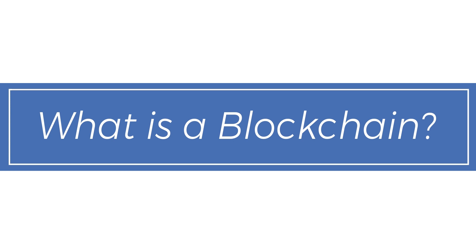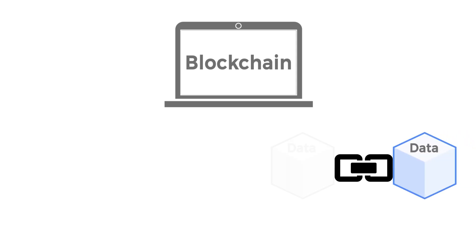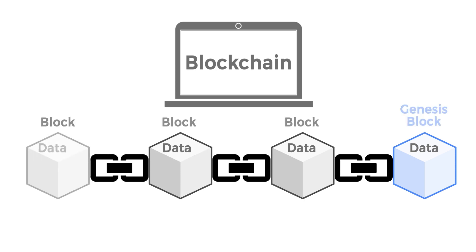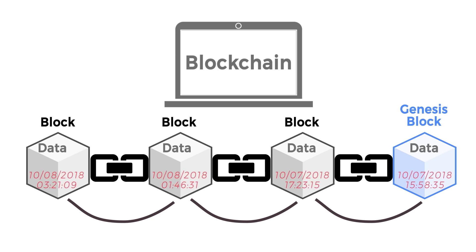What is a blockchain? Blockchain is computer technology combining data in a chain of linked blocks. The first created data block is called the Genesis block. Each block is connected to an earlier block, all the way to the Genesis block. Each created block has its own timestamp, making it immutable.